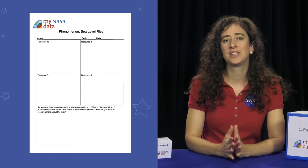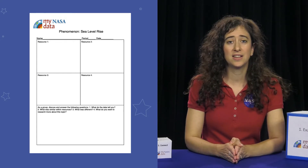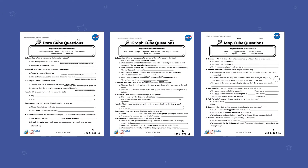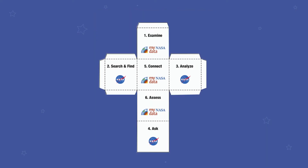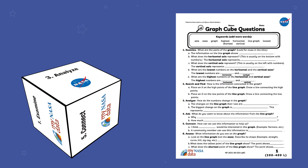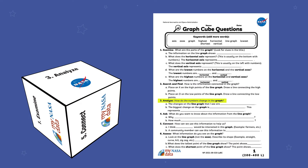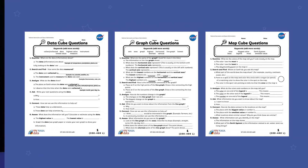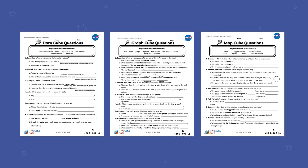To scaffold exploration of these data visualizations in this activity, consider using the differentiated question sheets with the data literacy cube. Students will roll the cube and answer the question that corresponds to the number rolled. You may also use a regular gaming die or a virtual die roller on a smart device in place of the cube.